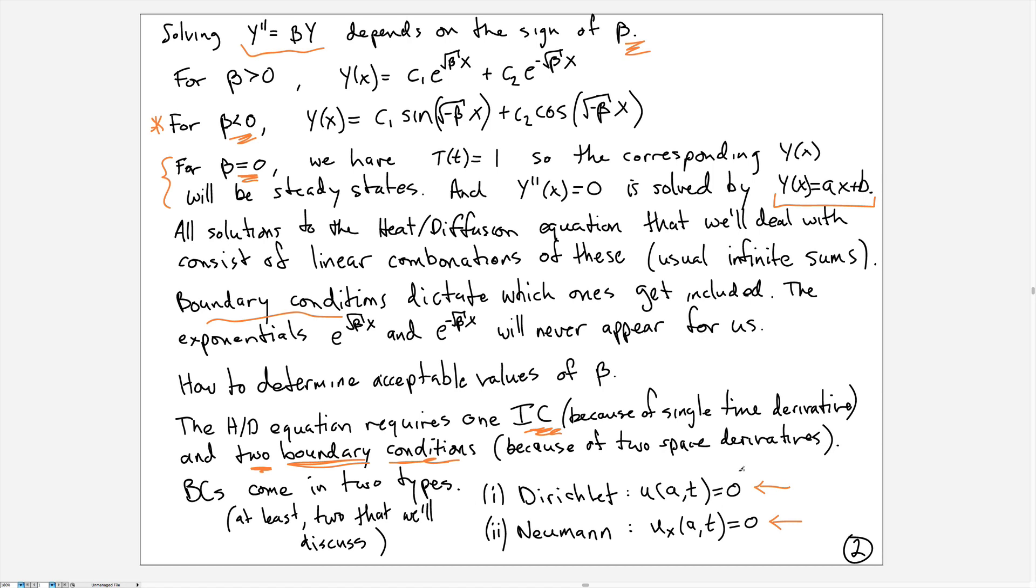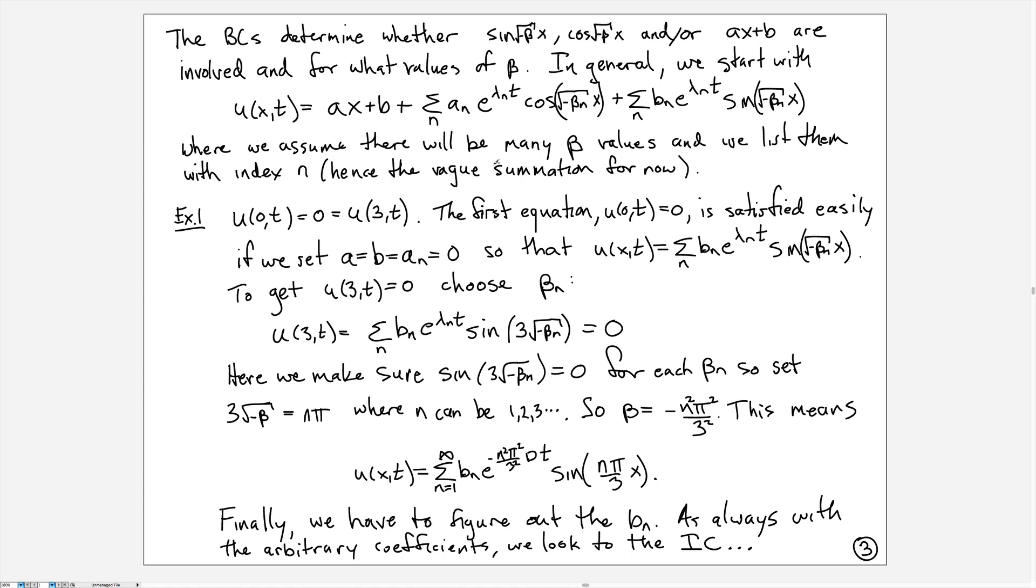How do these boundary conditions dictate the value of β? Well, the boundary conditions need to be satisfied. Because they're zero, we want to make sure all the pieces satisfy these conditions.